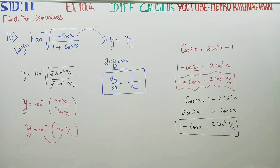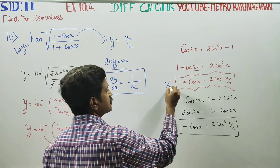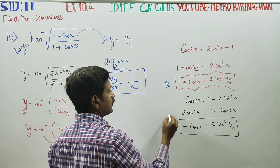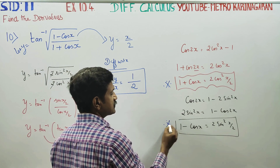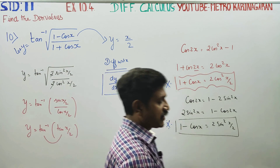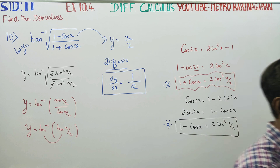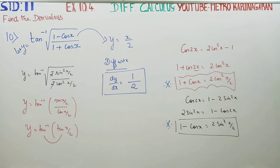1 by 2 is your final answer. These 2 formulas are very important. In this sum, we used trigonometric formulas to simplify. Okay, thank you.